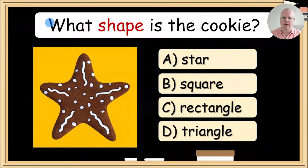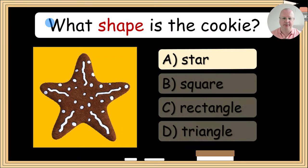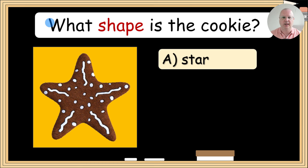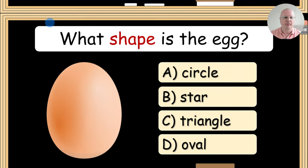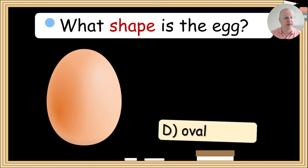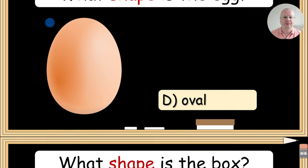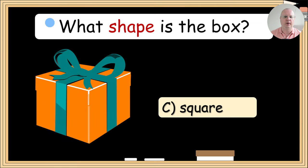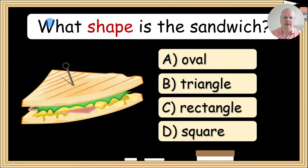So, it's a circle. What shape is the cookie? It is a star. Encourage them to say full answers — they don't have to, but it's best if they say 'it is a star.' What shape is the egg? It's an oval. What shape is the box? It is a square. And so on — let me go quickly through all these questions.